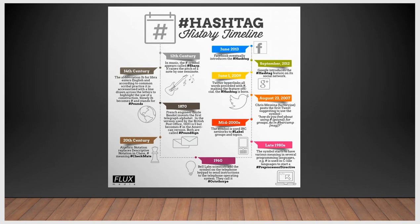Chris Messina, whose username was Factory Joe, posted the first tweet suggesting to use the hash symbol. He wrote: 'How do you feel about using pound, or the hash symbol, for groups — as in hashtag bar camp?' He sent this message and wanted to see if he could create a trend. In 2009, Twitter hyperlinked all words preceded with a hashtag, making the feature official.